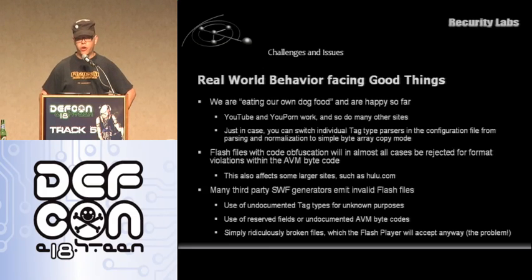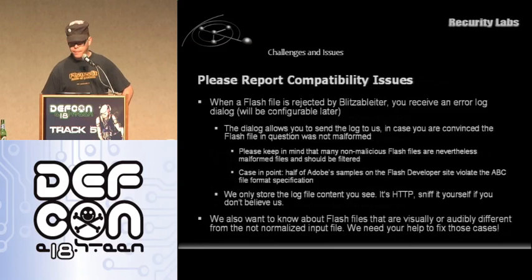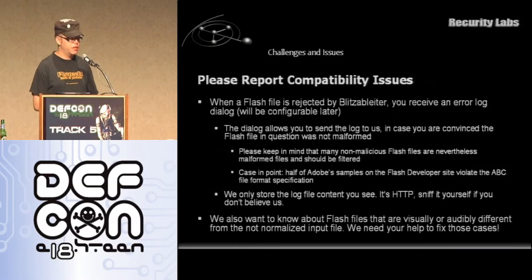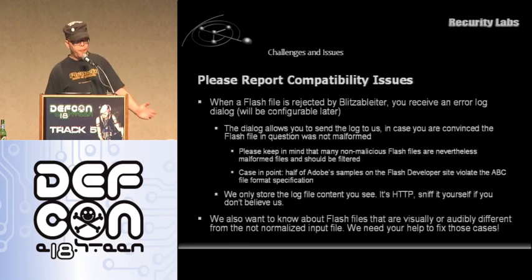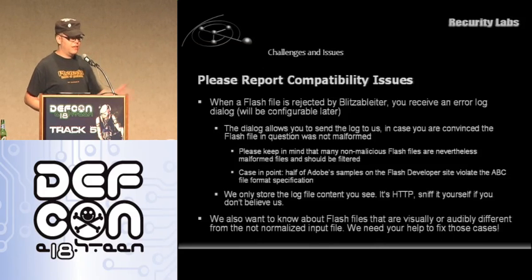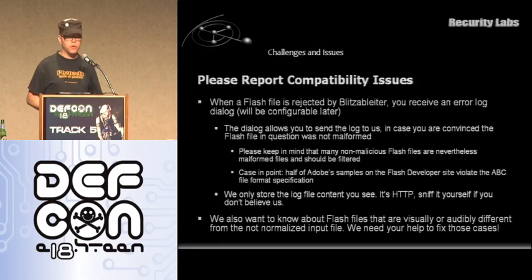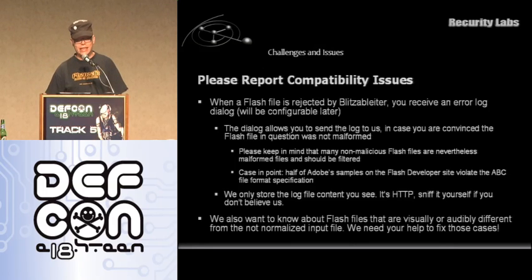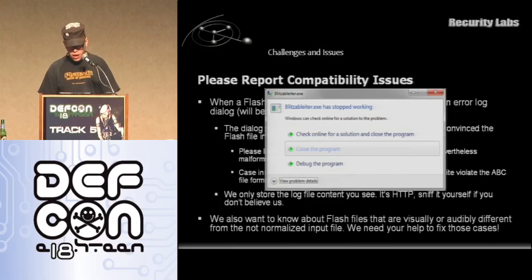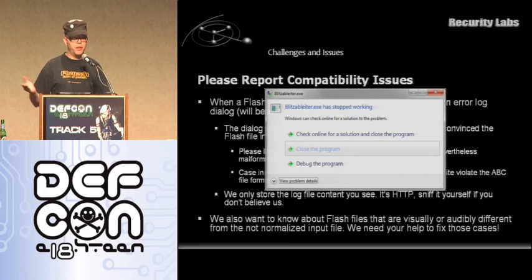Flash files with code obfuscation — for example Hulu.com — will get rejected because we cannot prove that the code flow doesn't do anything shady, which is why you can configure exceptions in NoScript. Many third-party generators produce utter garbage simply because the Flash player doesn't care — we do. If you have third parties generating Flash code anywhere in your company, I'd be grateful if you would try whether it passes or not, and if it doesn't then go talk to the people creating it. We really need people reporting compatibility issues — if the rendering looks wrong, complain, because that's something we cannot automatically test for. If you press the complain button it only logs what you see in the dialog — it's HTTP so you can sniff it — but please complain if stuff doesn't work, otherwise we can't get it to the stage we want.